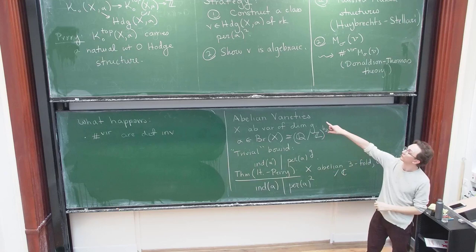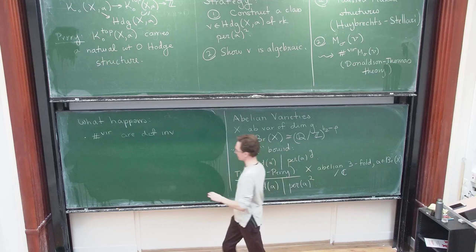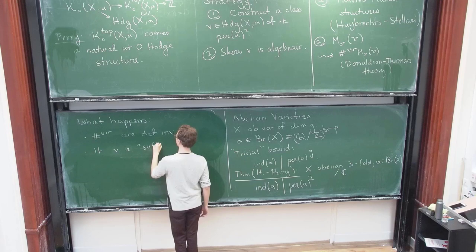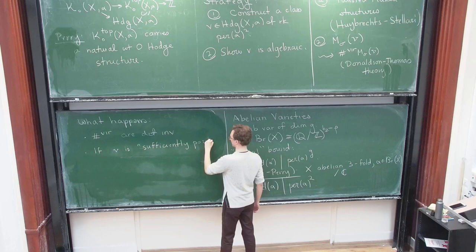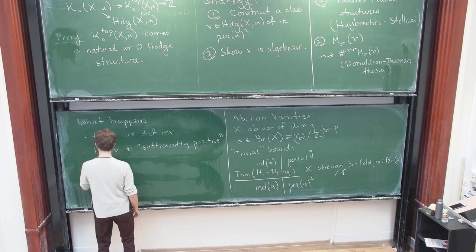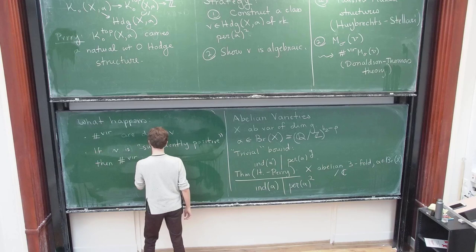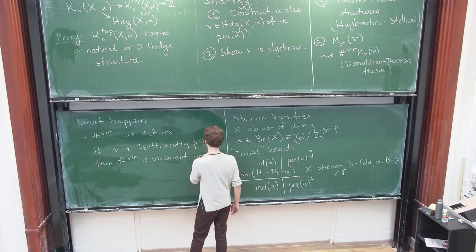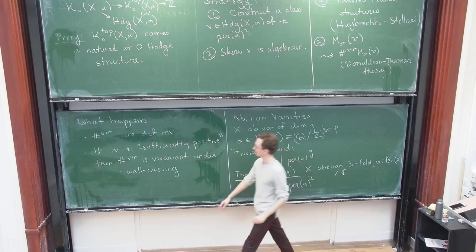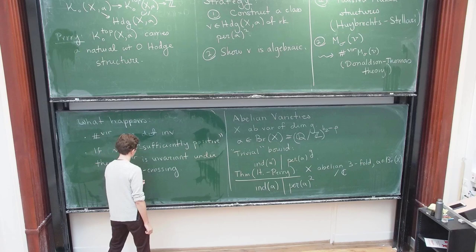So the second thing is that if your class V is, and let me just be brief for the sake of time, if it's sufficiently positive, you know, in a precise sense. I mean, just in the sense that on a K3, you could have a Mukai vector with v squared plus 2 being positive. So we have an analog in this picture. Then this class is invariant under, well, first of all, it's invariant under wall crossing of stability conditions. And this implies, actually, that it's invariant under the action of auto-equivalences.